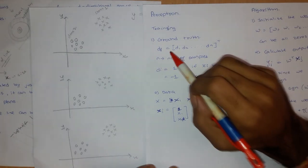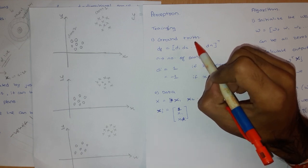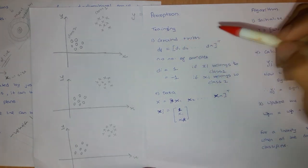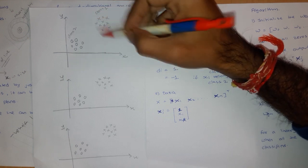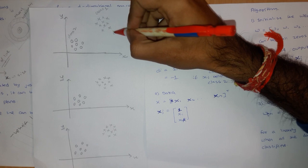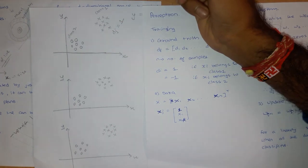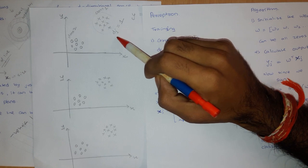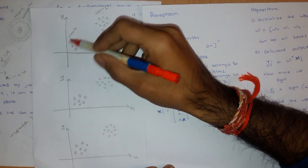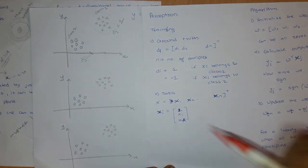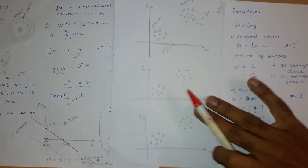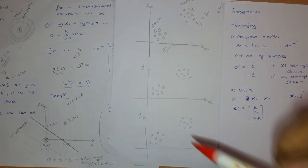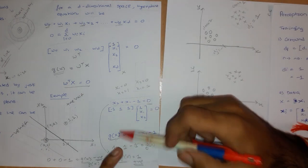We have the ground truth. The ground truth says that d1, d2, ..., dn are the labels we know. Suppose these samples belong to class one, so dj is equal to one for all those samples. And for all the other samples, dj will be minus one. We use plus one and minus one simply to indicate whether a sample lies in the positive half or the negative half — we just check the sign of the output.